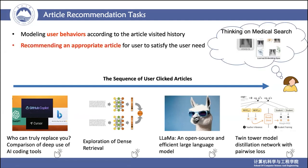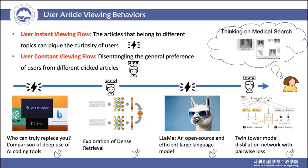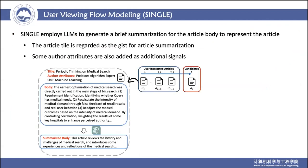Next, we hope that the article recommendation system can recommend an article related to search, such as thinking on medical search. As shown in the clicked articles of the user, some articles belong to different topics and can pique the curiosity of the user, while some articles are on the topic of search, reflecting the constant interest of the user. In this paper, we propose the SINGLE model to model the different user viewing flows for recommending articles.